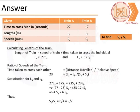Let us denote the length of train A by LA, length of train B by LB, the speed of train A by SA, and the speed of train B by SB. From the question, we need to find SA/SB.